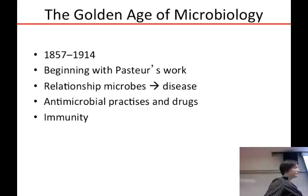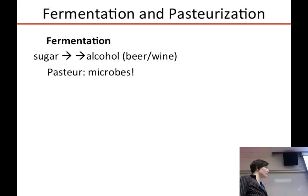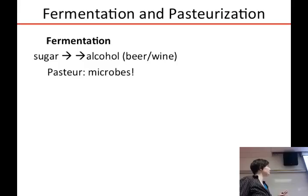Shortly after this, we have what we consider the golden age of microbiology — a series of decades beginning with Pasteur's work in which a lot of discoveries were made. People began to accept the basic premises of biogenesis and microbial existence, and a relationship was established between microbes and disease. This allowed people to develop ways to prevent disease by understanding microbes, and ultimately began a whole new field of immunology.